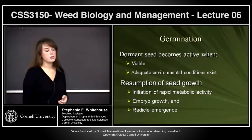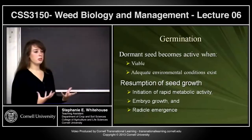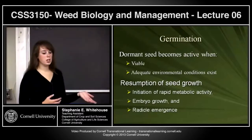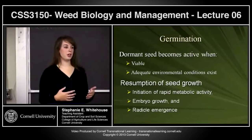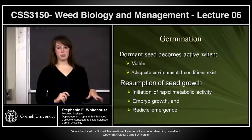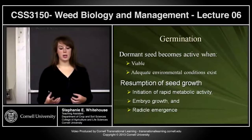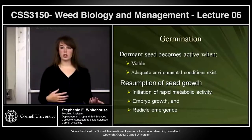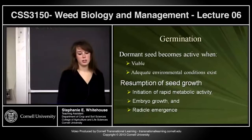Germination begins when a dormant seed becomes active, which basically means that the seed has become viable for germination and adequate environmental conditions exist in the growing area of the seed. This means that the seed has stopped being dormant, hormone levels have changed within the seed, the embryo starts to grow, and environmental conditions — temperature, light, and other things — are correct for that seed and plant.